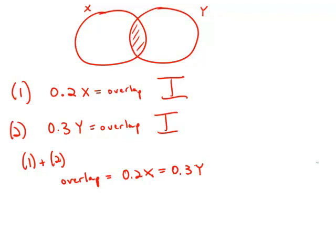Well, now we have an equation. In fact, we could set up a ratio: 0.2 over 0.3 equals Y over X. Or in other words, 2 over 3 equals Y over X.